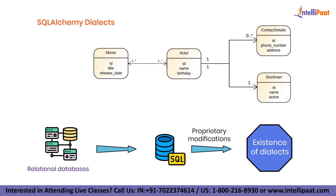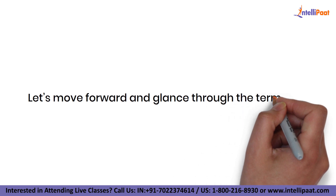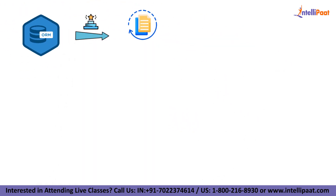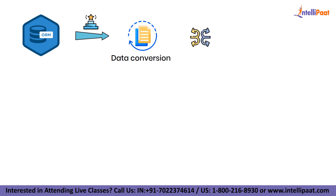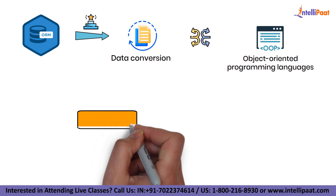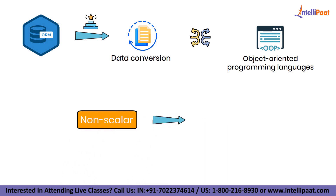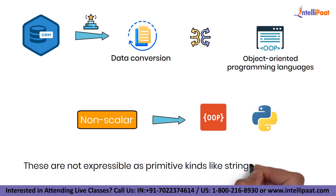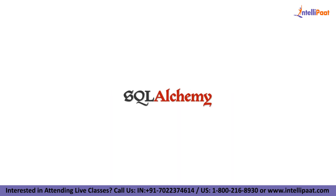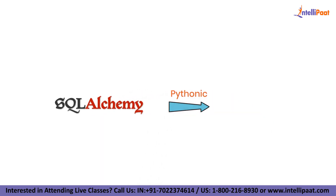Let's move forward and look at the term ORM. ORM helps in accomplishing data conversion between incompatible type systems in object-oriented programming languages. Non-scalar types are typically present in the type system of an object-oriented language like Python. These are not expressible as primitive kinds like strings and integers. To conclude, SQL Alchemy provides a nice, Pythonic way of interacting with databases.